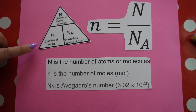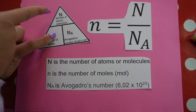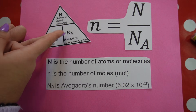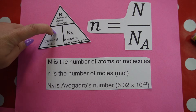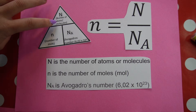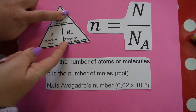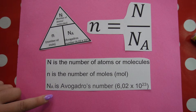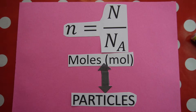Let's take a look at this triangle over here that relates our three variables. Number of moles is equal to your number of atoms, molecules, particles, or formula units divided by Avogadro's number. I can also work out the number of atoms or molecules by taking the number of moles and multiplying it by Avogadro's number. This is what the variables are and these are their units. Let's look at how we use this formula with particular examples.